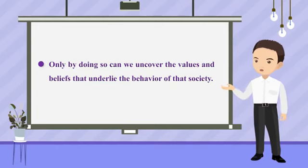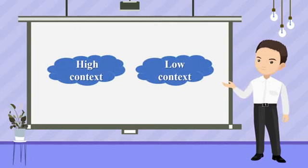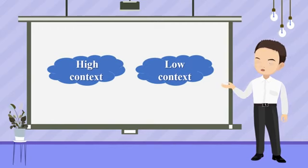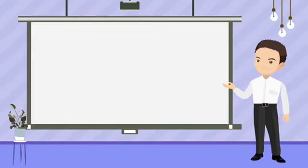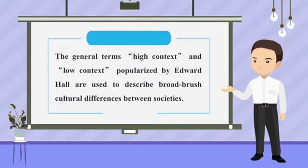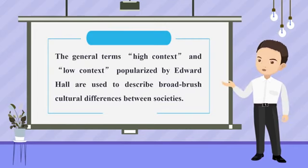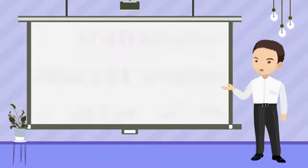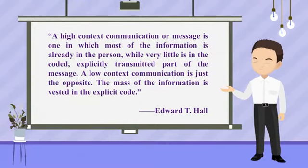He also categorizes cultures as being either high or low context, depending on the degree to which meaning comes from the settings or from the words being exchanged. The general terms high context and low context, popularized by Edward Hall, are used to describe broad-brush cultural differences between societies.